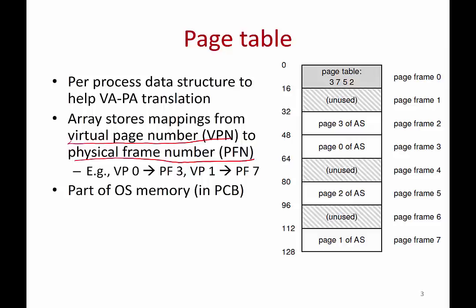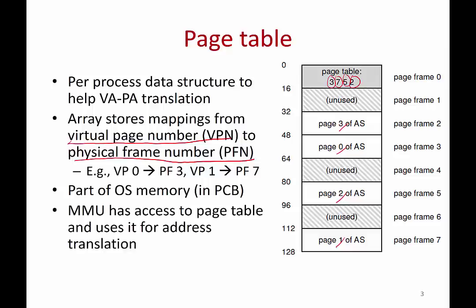For example, for a simple process that has pages 0, 1, 2, and 3: page 0 is stored in frame 3, page 1 is stored in frame 7, and so on. You can see these four different physical frame numbers corresponding to logical pages 0, 1, 2, 3. This forms the page table of this process, and it is stored as part of the operating system code.